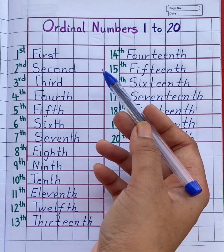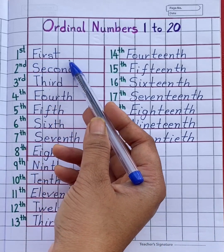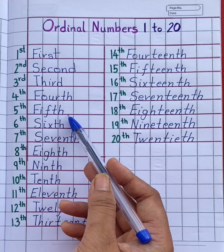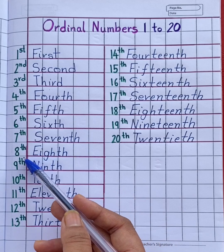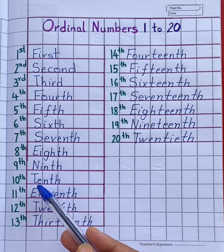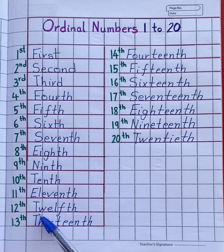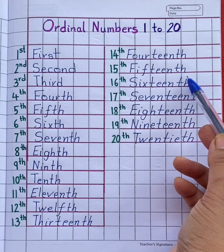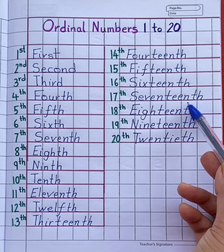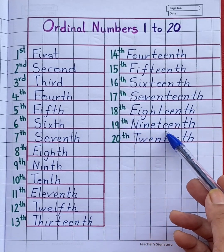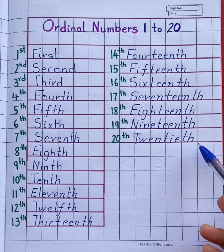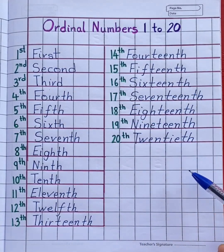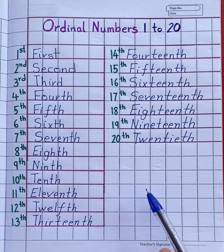Now let's recall the ordinal numbers: 1st, 2nd, 3rd, 4th, 5th, 6th, 7th, 8th, 9th, 10th, 11th, 12th, 13th, 14th, 15th, 16th, 17th, 18th, 19th, 20th. So students, watch the video carefully and learn 1 to 20 ordinal numbers. In the next video we are going to learn more about ordinal numbers.